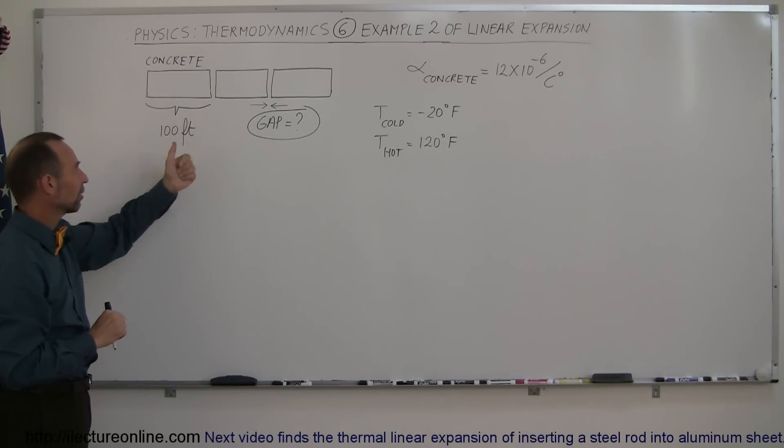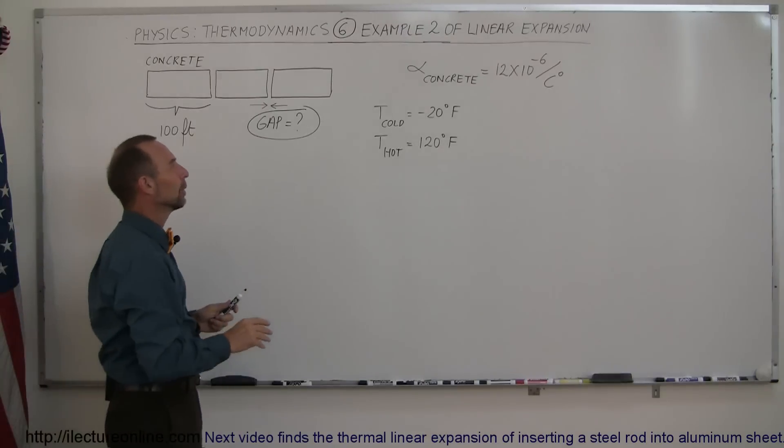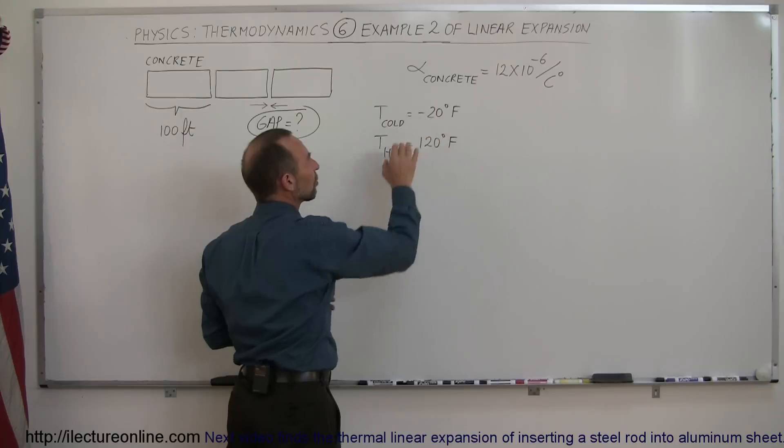So let's say that each section is 100 feet long, they're made out of concrete, and we want to know how big a gap to allow so that we can have temperatures of minus 20 degrees Fahrenheit in the wintertime and 120 degrees Fahrenheit in the summertime without the road deck getting destroyed.